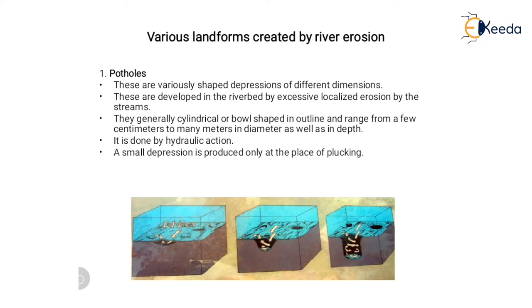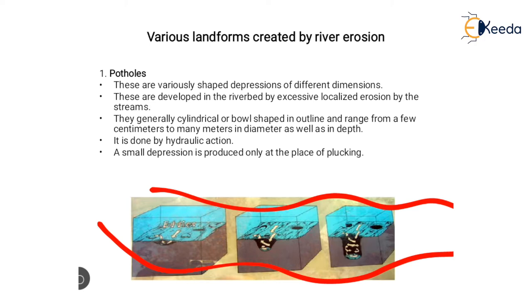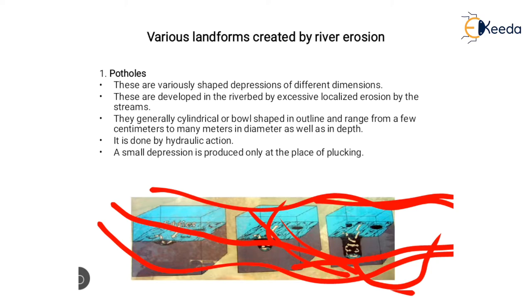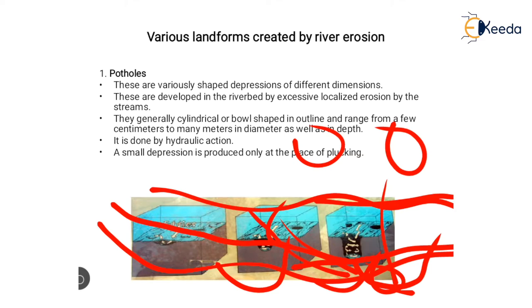The first landform created by river erosion is the pothole. These are variously shaped depressions of different dimensions developed in a river bed by excessive localized erosion. They are generally cylindrical or ball-shaped in outline, ranging from a few centimeters to meters in diameter and depth. They form through hydraulic action: high pressure from the moving river plucks material from the riverbed, forming small depressions. Water moves in a circular motion into these depressions, making them circular — this is called a pothole.